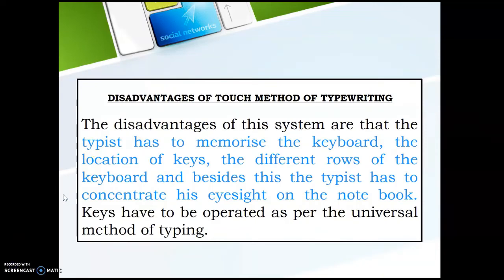The disadvantage of touch method is that the typist has to memorize the keyboard — the location of the keys and the different rows — and must concentrate eyesight on the notebook. Keys have to be operated as per the universal method of typing. However, by practice, the keyboard can easily be memorized, so it is not really a major disadvantage. In summary, both sight method and touch method have their own advantages and drawbacks, and I hope it is now clear to all students.